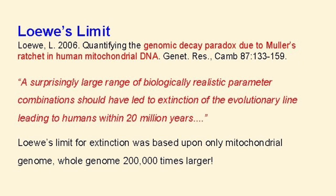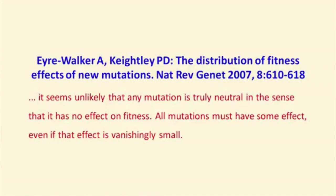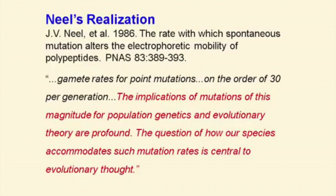The high mutation rate and the increased genetic load over time means that natural selection cannot override or counterbalance the degradation occurring in biological systems. Low-impact and slightly deleterious mutations are accumulating in populations over time, and this fact is a fatal problem for evolutionary theory.